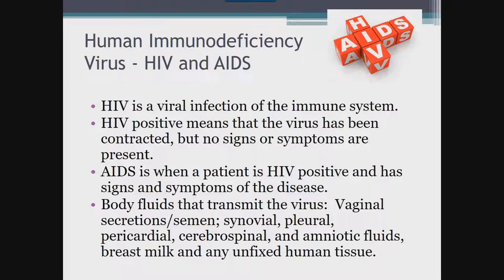HIV is a viral infection of the immune system. Body fluids that transmit the virus include vaginal secretions and semen, synovial, pleural, pericardial, and cerebral spinal fluid, amniotic fluid, breast milk, and any unfixed human tissue. Patients diagnosed with HIV have two diagnoses depending on extent: HIV positive means the virus has been contracted but no signs or symptoms are present; AIDS, or acquired immunodeficiency syndrome, is when a patient is HIV positive and has signs and symptoms of the disease. Exposure to HIV in the laboratory can occur at any point during the processing and handling of specimens.